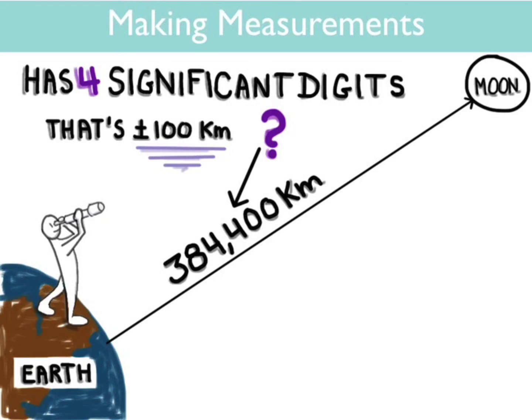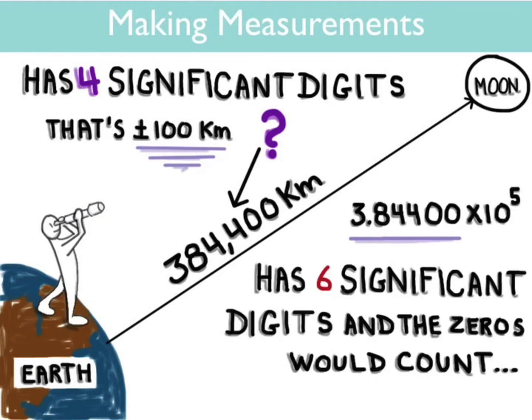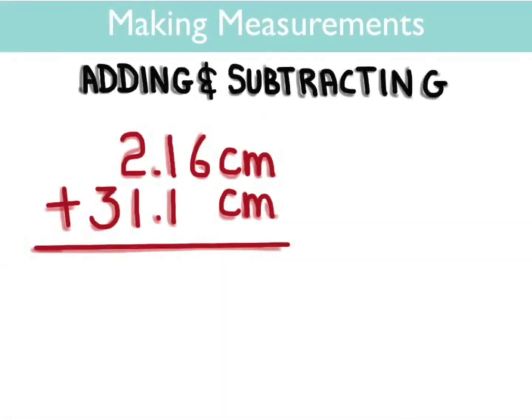So what if you want those zeros to count? Well, then you'd have to write the number like this, in which case the zeros do count and the number has six significant digits, which might seem better. Only now you're misrepresenting the measurement. You see, the moon's orbit is not a perfect circle, which is why the number was recorded as plus or minus a hundred kilometers in the first place.